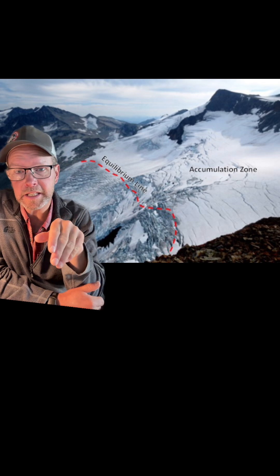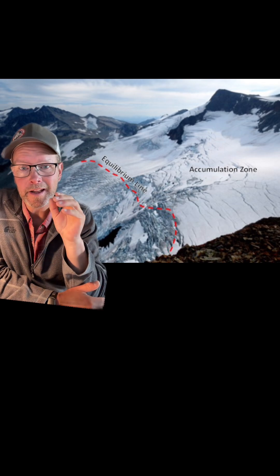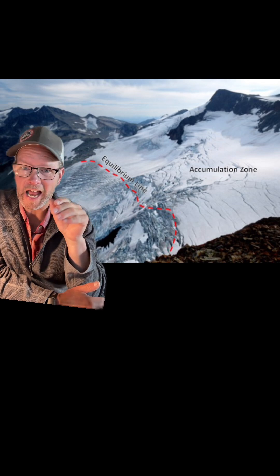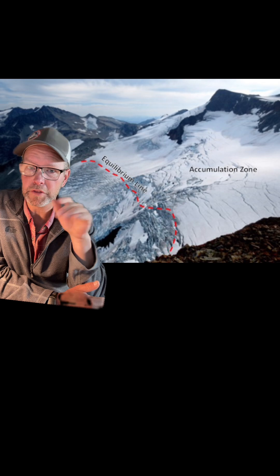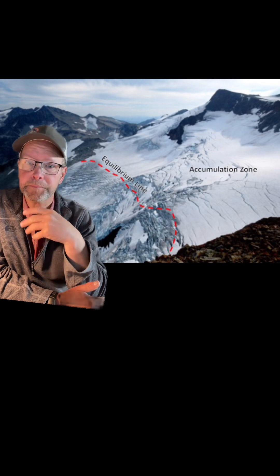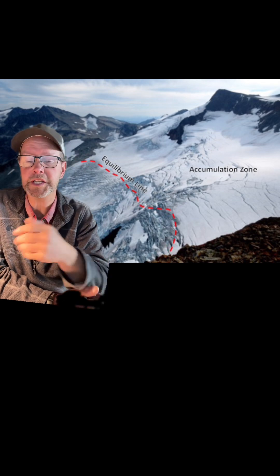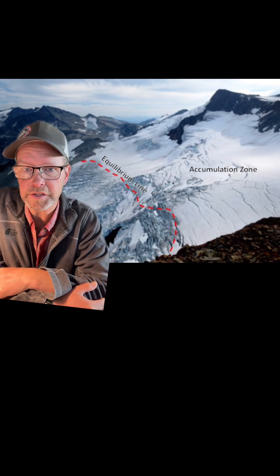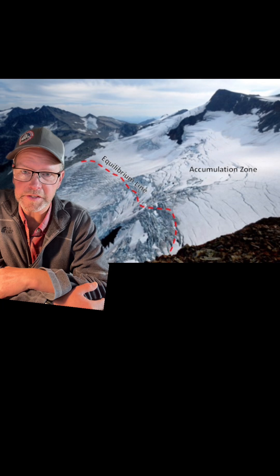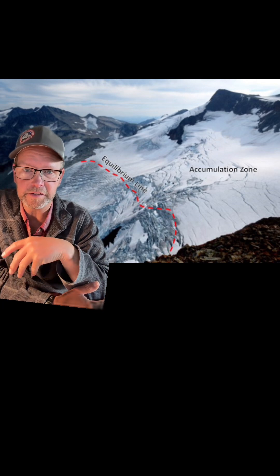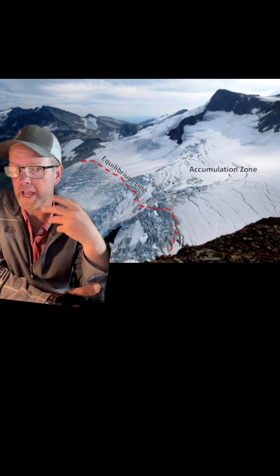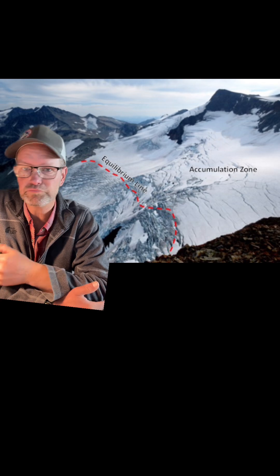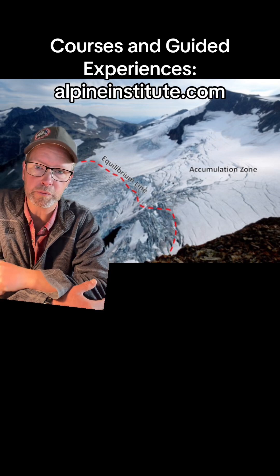And in many cases, that line is actually above the top of the mountain. And that's why we're seeing glacier loss in places like the North Cascades, Himalaya, Andes, and many other regions.